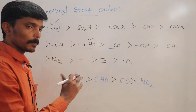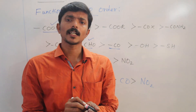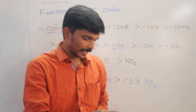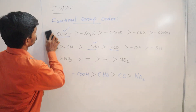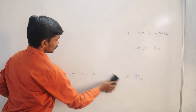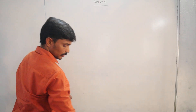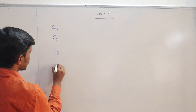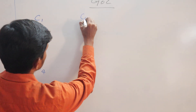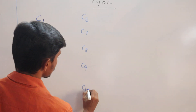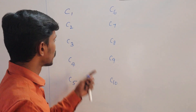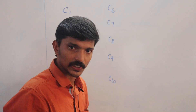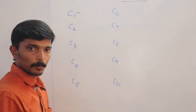Let me give some examples. In organic compounds, there can be one carbon, two, three, four, five, six, seven, eight, nine, ten and so on. So you can have any number of carbons. If you want to call one carbon, you name it accordingly. If there are two carbons, you name it differently.